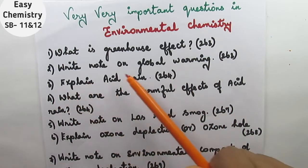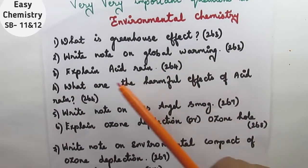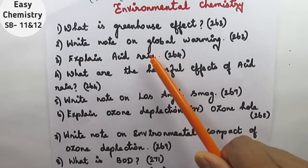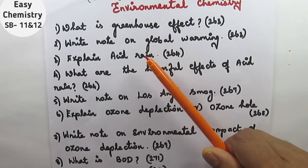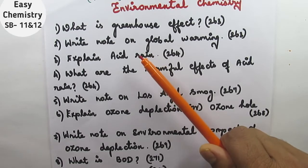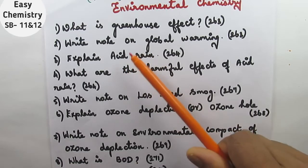Question number two, write note on global warming. Question number three, explain acid rain. This is very important, acid rain. How acids are formed and how they come to us as rain, we will see this very important concept.